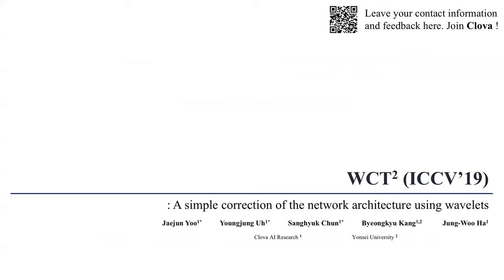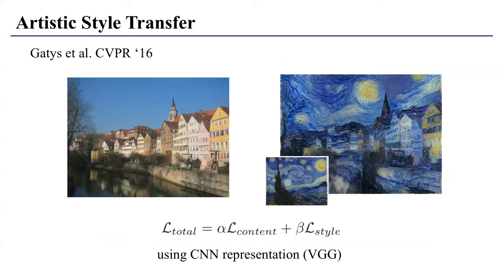First, let me introduce our photorealistic style transfer model using wavelet transforms, which is still a strong result in this area as far as I know. When machine learning people hear about style transfer, most of them might recall artistic style transfer. Instead of using handcrafted feature extractors like wavelets, it uses CNN representation to extract the style of one image and impose it onto another image while maintaining its contents.